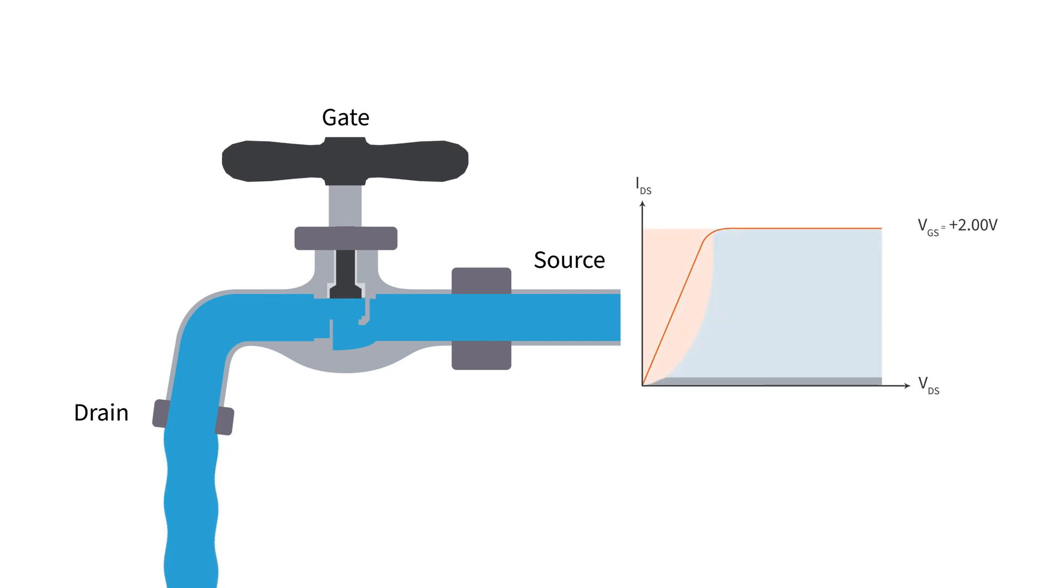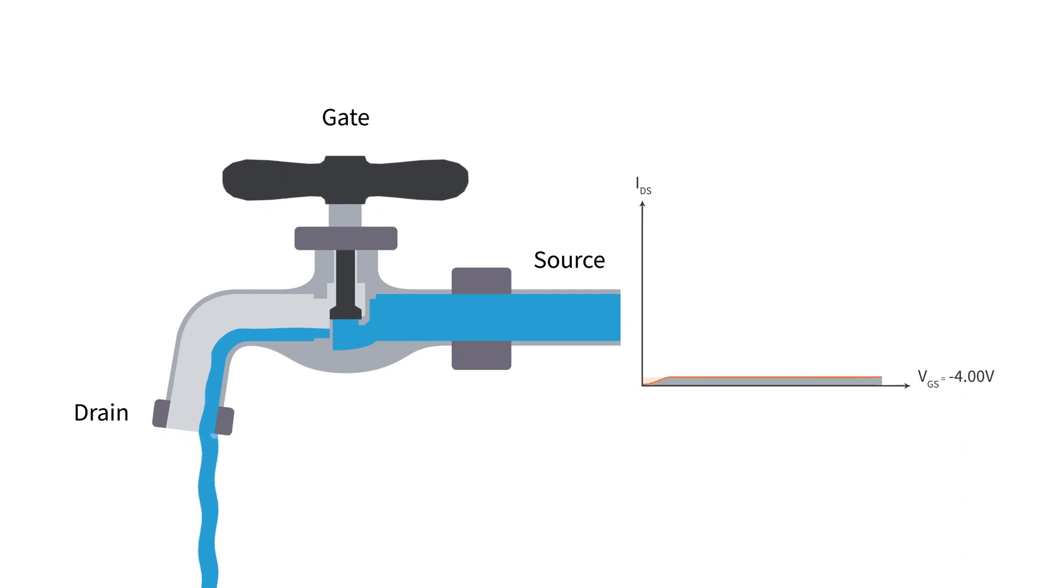Yet, if you apply a more negative voltage to the gate, it is like closing the spigot more and more until eventually no more water flows reaching the cutoff region.